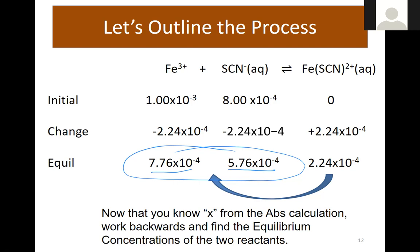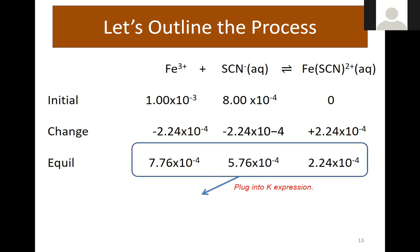Now I have all the equilibrium concentrations. These are now going to get plugged into the equilibrium expression where we put the products divided by the reactants multiplied together. And when I do that, I get 501.